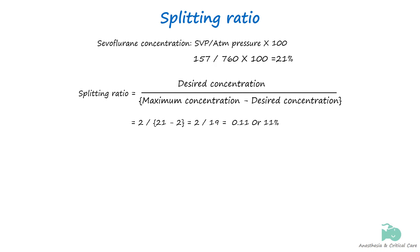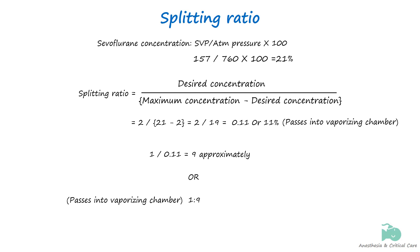We can also convert this value into a ratio by dividing 1 by 0.11, which equals approximately 9. This means for every one part of fresh gas that passes through the vaporizing chamber, approximately 9 parts of fresh gas bypass it. Note that this calculation is a simplified way of looking at the splitting ratio, as there are many factors that impact the ratio.